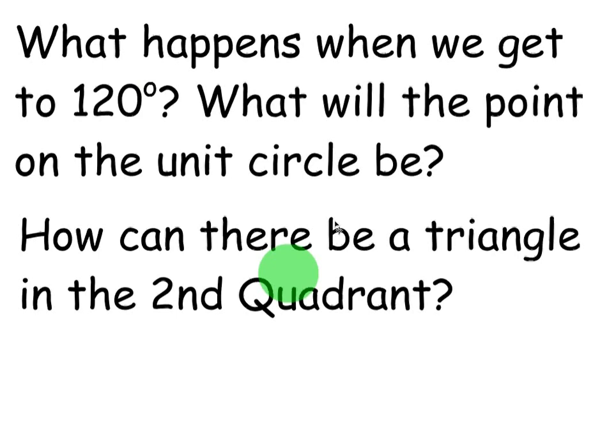The question now becomes, what happens when we pass 90 degrees? For example, at 120 degrees we're in the second quadrant. What would the point on the unit circle be at that particular location? And how can there be a triangle in the second quadrant? How can we use trig to figure that out?